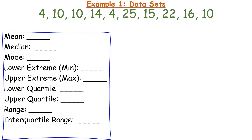Let's look at Example 1. We want to find the mean, median, mode, and so forth using this data set. To find the mean — the average — I add all my numbers up. I get 130, and I have ten numbers, so 130 divided by 10 is 13. My mean is 13.